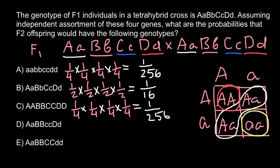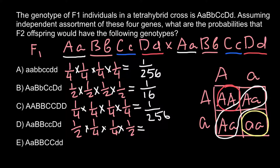Example D would be one half for the first allelic pair, one quarter for the second, one quarter for the third, and one half for the last one. Using the product rule, the answer would be one over 64.